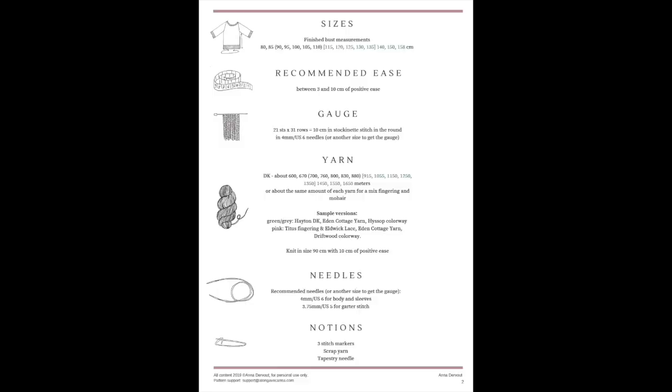The overview section is on page two of this pattern. The designer has done a very nice job of laying out a lot of the important information you'll need upfront to successfully knit this sweater. Most contemporary patterns will include very similar information in the overview: things like size, recommended ease, gauge, the yarn that was used for the sample, needle sizes, and the notions you'll need. But you have to remember that all of this information is really open to interpretation and you'll need to make some careful choices in order to get the best outcome.